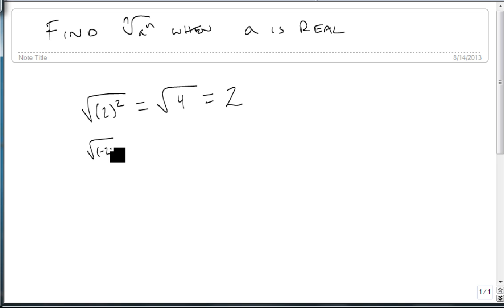What about the square root of (-2) squared? Well, negative 2 times negative 2 is also 4, but when I take the square root of it, it becomes 2.